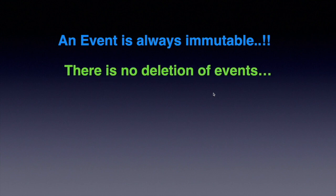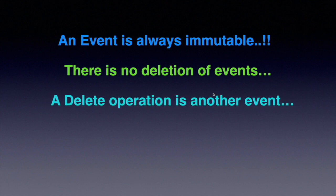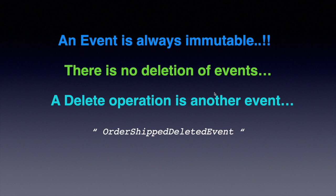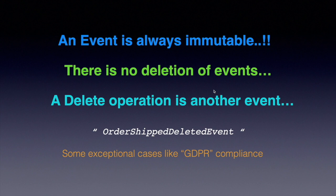An event is always immutable — once created, it cannot be changed. There is no deletion of events; a delete operation is itself another event. So if you want to delete something, we should not actually delete it — the deletion operation should be another event, such as an order shipment deleted event. Exceptional cases like GDPR compliance, where the government forces organizations to delete customer data, are exceptions. Otherwise, we do not delete any data from our event store; we mark it as an entity deleted event.